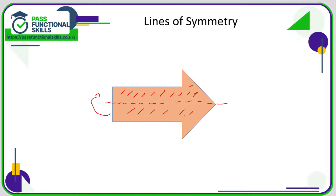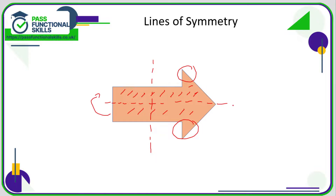If I were to make a fold down the middle, this is not a line of symmetry, because the rectangular part on the left-hand side will not sit perfectly on the right-hand side — the pointy triangle bits would overlap. So this arrow only has one line of symmetry, and that is the horizontal line.